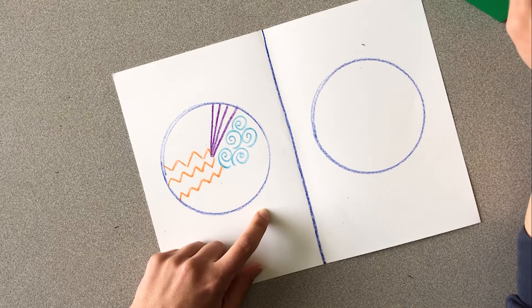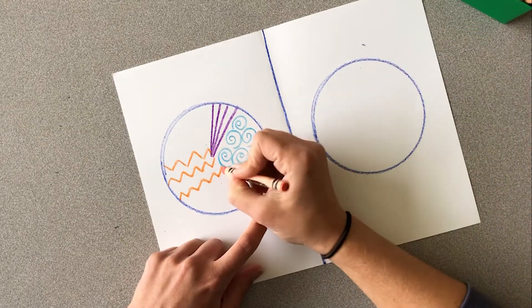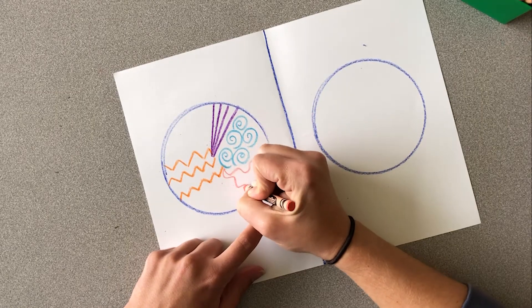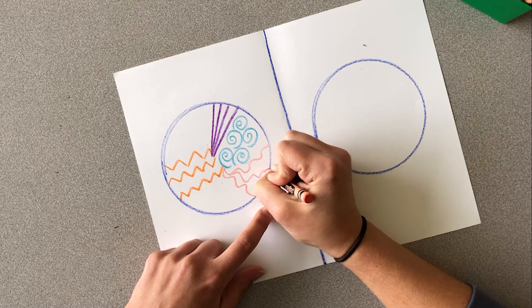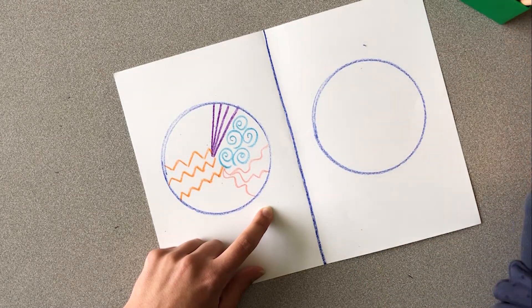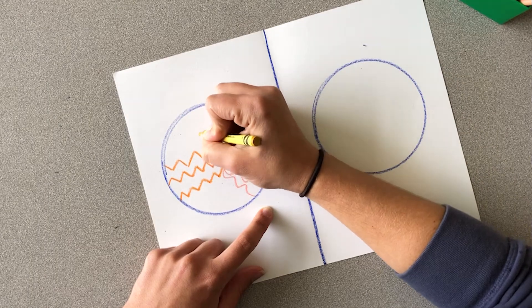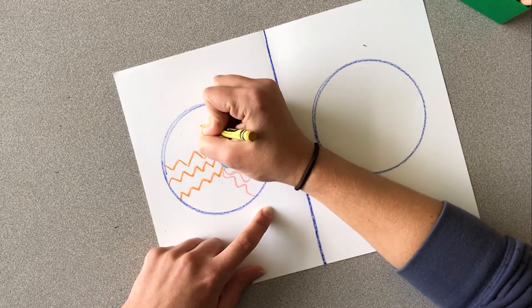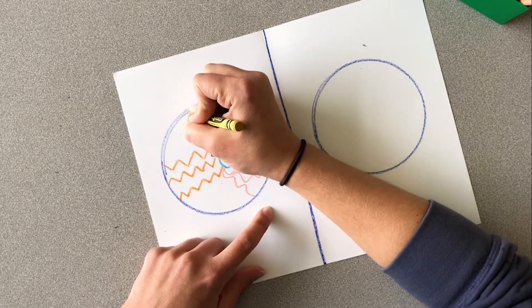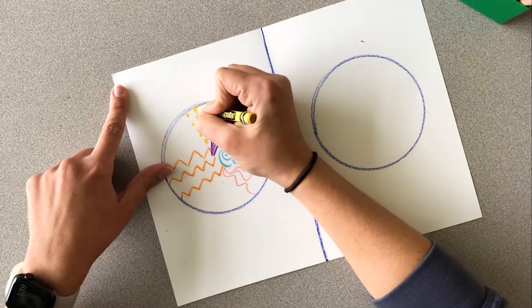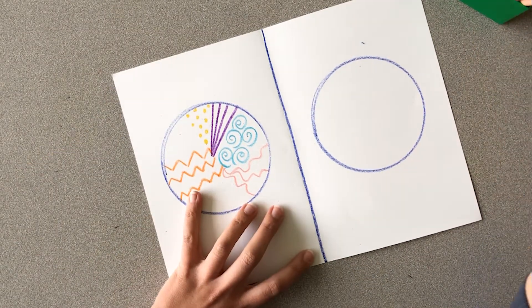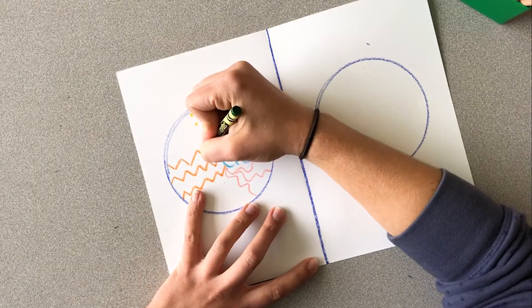Maybe I need some squiggly wigglies. So maybe I'll squiggle, squiggly wiggly all the way to the edge. It's pretty fun. Ooh, maybe I want some polka dots. Maybe over here I'll make polka dots, polka dots, polka dots like that, all the way. Let me do a few more. I'm trying to switch colors every time I switch line designs to make it fun and colorful.